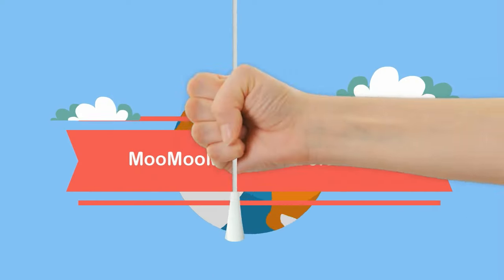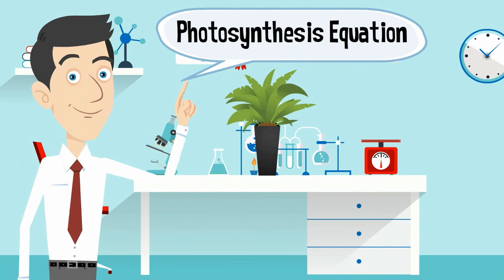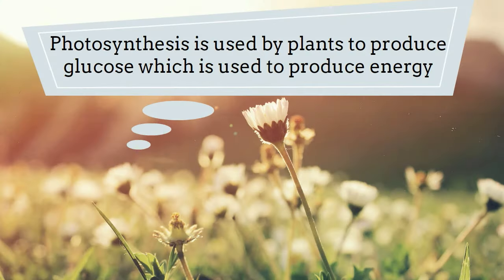Welcome to Moo Moo Math and Science. In this video I would like to talk about the photosynthesis equation. Photosynthesis is used by plants in order to produce glucose that is used for energy.